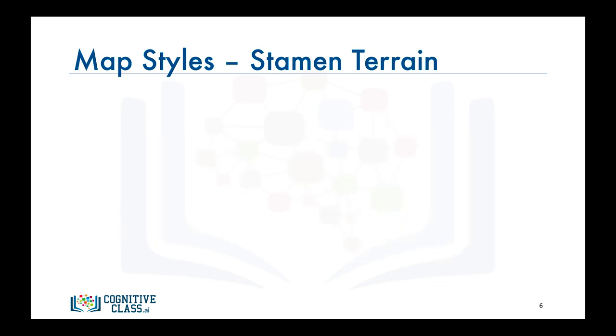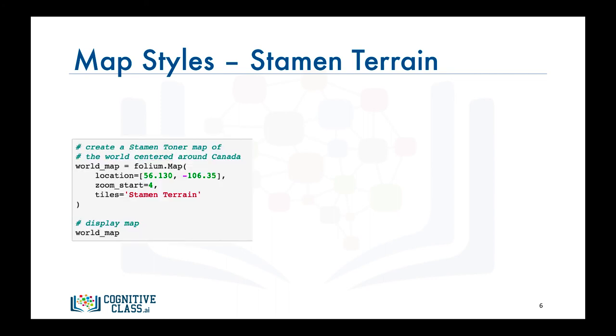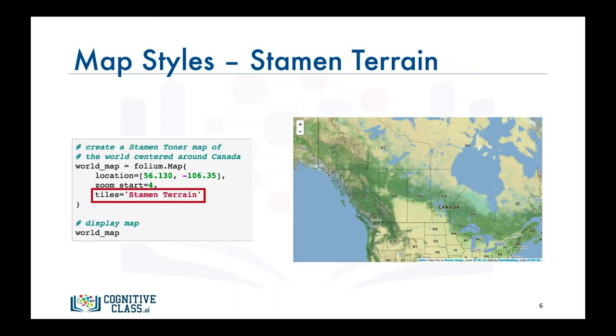Another style is stamen terrain. Let's create a map of Canada in stamen terrain. This style is great for visualizing hill shading and natural vegetation colors.